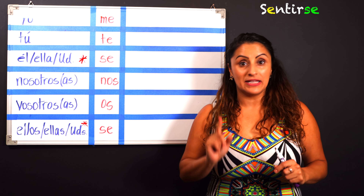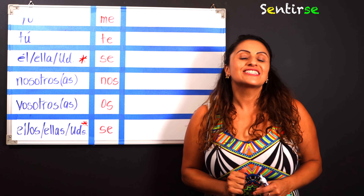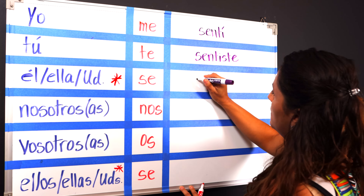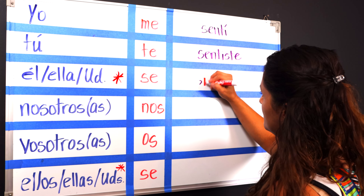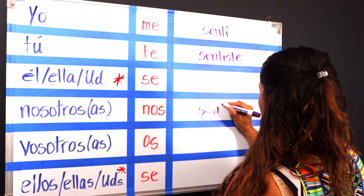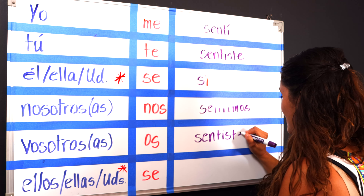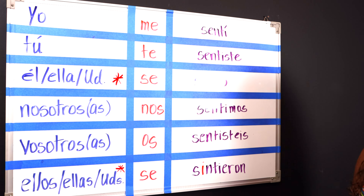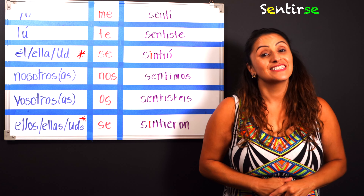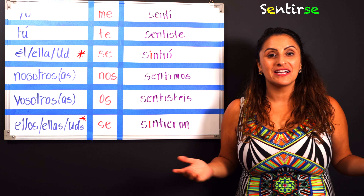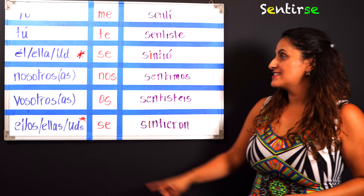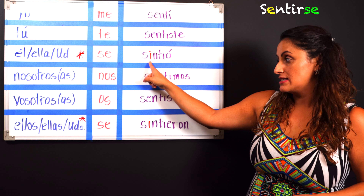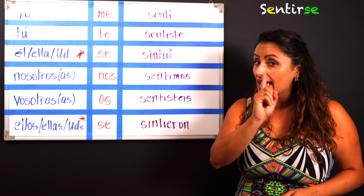Today we're going to go ahead and look at two verbs: the verb SENTIRSE and the verb DORMIRSE. You probably already can tell that those are reflexive verbs since we have the SE, the reflexive pronoun, at the end. We know that SENTIR and DORMIR are stem-changers in the present tense, so that tells us we have to stem-change them in the preterite — but only in the third person.